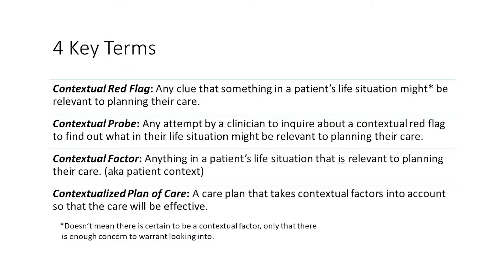Although we try to minimize jargon, there are four important terms I'd like to introduce here that will guide the discussion that follows. The first is a contextual red flag — any clue that something in a patient's life situation might be relevant to planning their care. The second is a contextual probe — any attempt by a clinician to inquire about a contextual red flag. The third is a contextual factor — anything in a patient's life situation that is, in fact, relevant to planning their care, in other words, the patient's life context. And finally, a contextualized plan of care — a care plan that takes contextual factors into account so that the care will be effective.